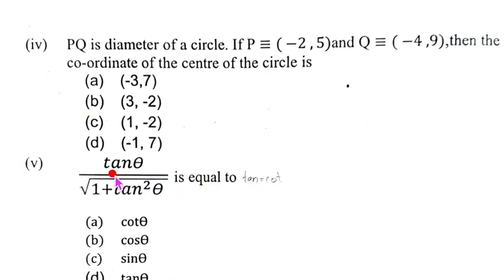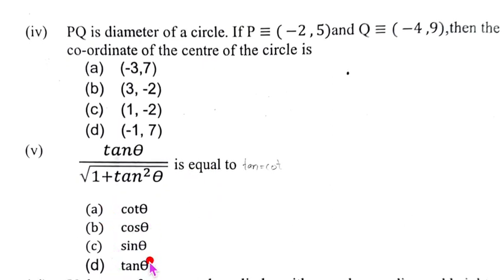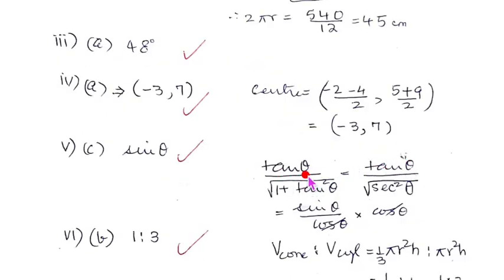Now let us look at the fourth one. tan θ upon root of 1 plus tan square θ is equal to. Can you see your ABCD over here? Let us see what is our answer. So we write the solution like so: tan θ upon under root 1 plus tan square θ.